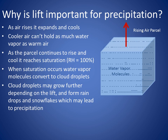Why is lift important for precipitation? As air rises, it expands and cools. Cooler air cannot hold as much water vapor as warm air. As noted in the parcel to the right, if it continues to rise and cool, it reaches saturation. When saturation occurs, the water vapor molecules in that parcel convert to cloud droplets. Cloud droplets may grow further depending on the lift and form raindrops and snowflakes, which may lead to precipitation.